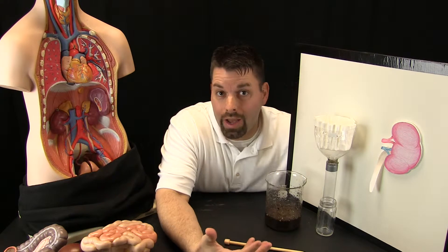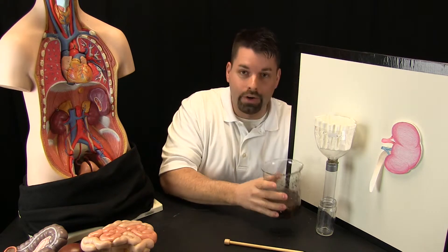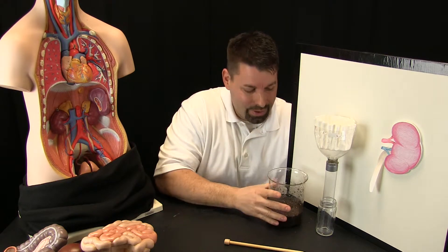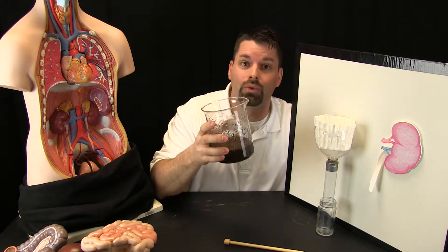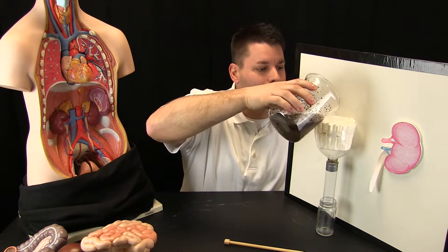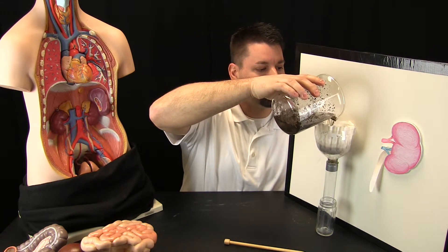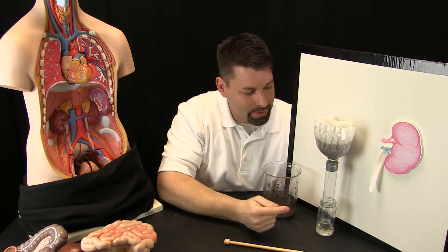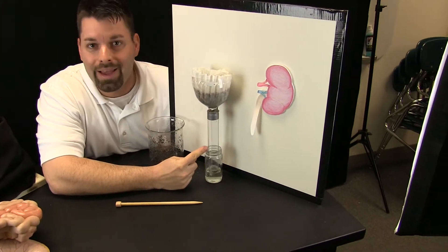Here we have a model to show you how the kidneys work. We have our dirty blood, and the kidney really is nothing more than a filter. It is going to clean out all of this dirty water, except we do not have water inside of us. We have blood. So let us pour it in, and watch what happens. Take a look as it is dripping down. That is clean.